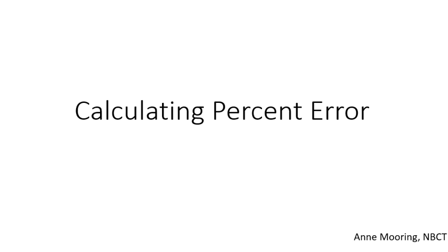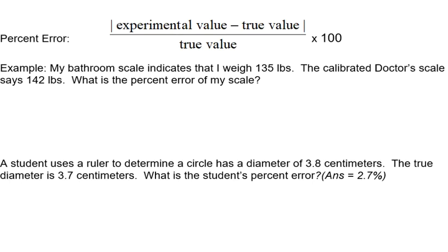We're going to be looking at calculating percent error. The calculation for percent error is your experimental value, which would be your lab value, minus the true value. So your true value might be your real value. It could be called the standard value. It might be called the actual value. All of these are terms that you might see.